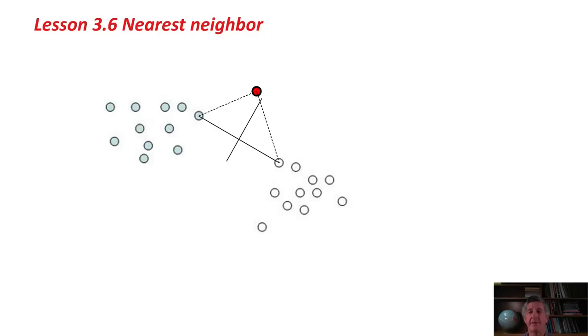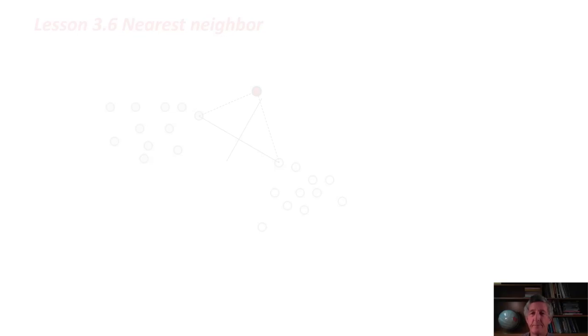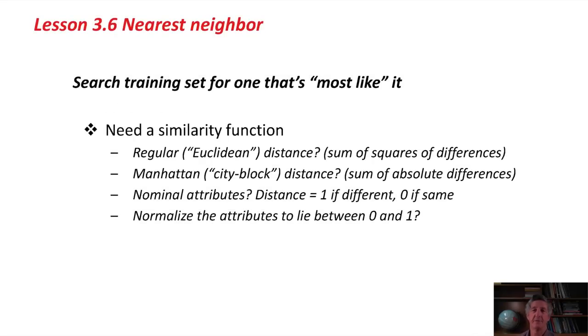The nearest neighbor method produces a linear decision boundary. Actually, it's a little bit more complicated than that. It produces a piecewise linear decision boundary, with sometimes a bunch of little linear pieces of the decision boundary. The trick, of course, is what do we mean by most like? We need a similarity function.